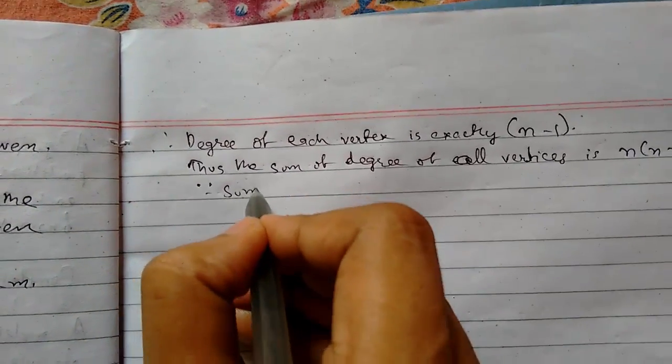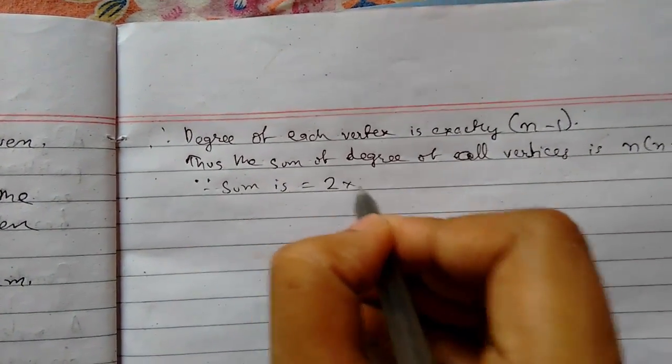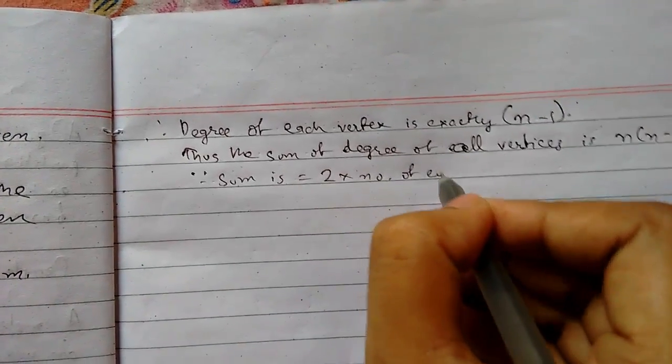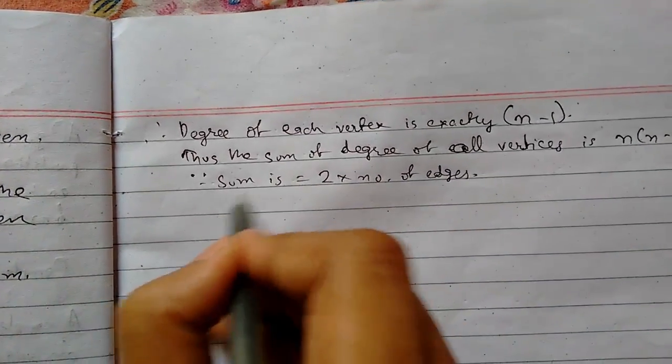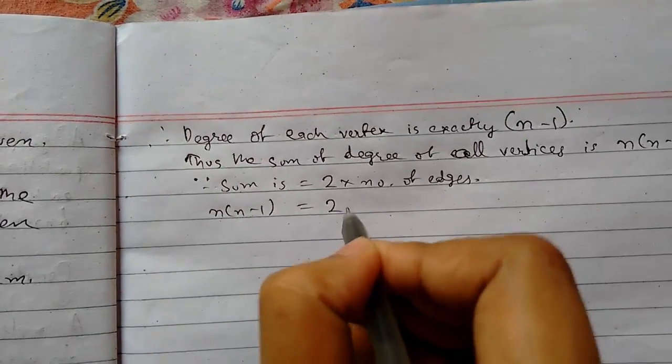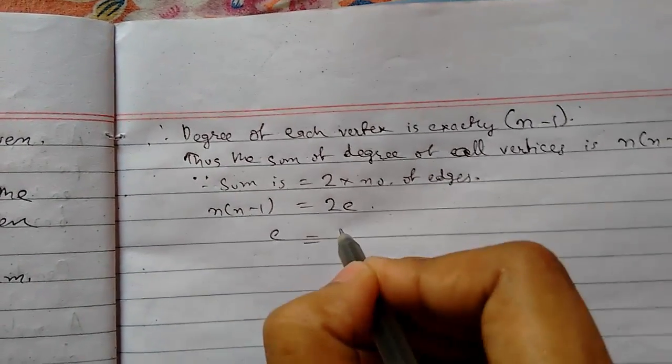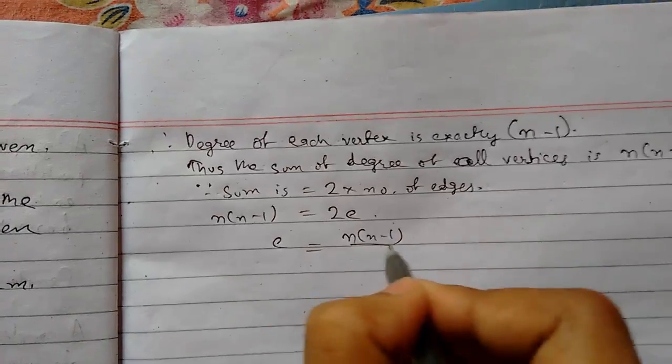Since sum is 2 into number of edges. Now here it is n into n minus 1. It is number of edges times 2. So e equals to n into n minus 1 by 2.